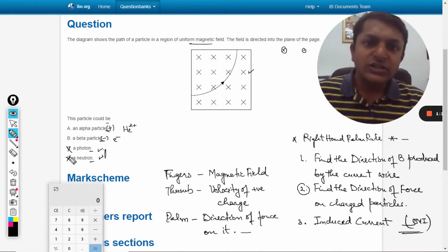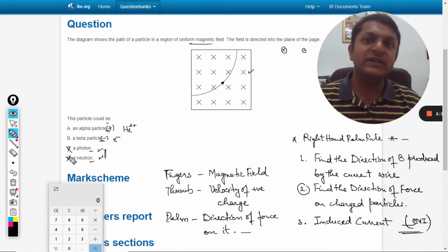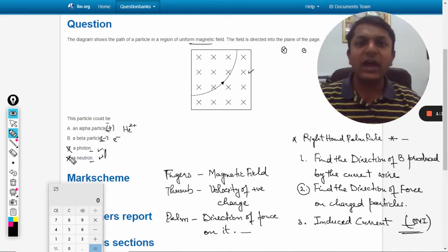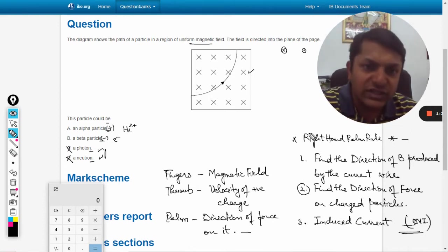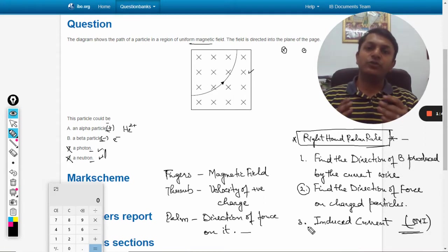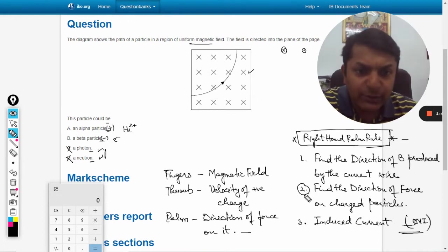As we have been discussing in earlier videos, instead of Fleming's right hand rule or left hand rule, I prefer to use the right hand palm rule. This rule has three types: Type 1, Type 2, and Type 3, based on what we need to find. For this problem, we use Type 2.